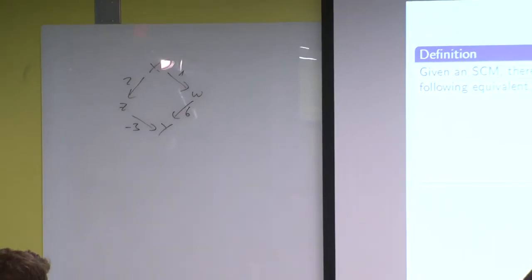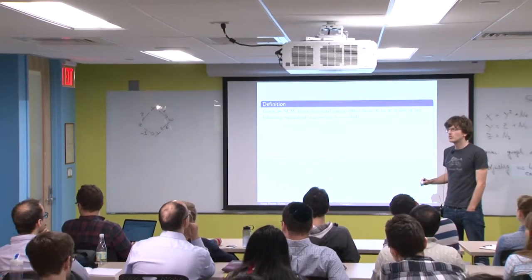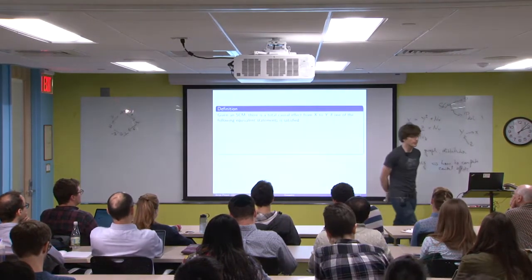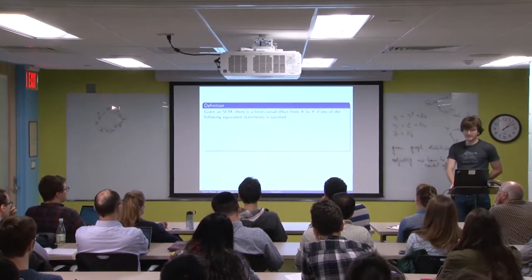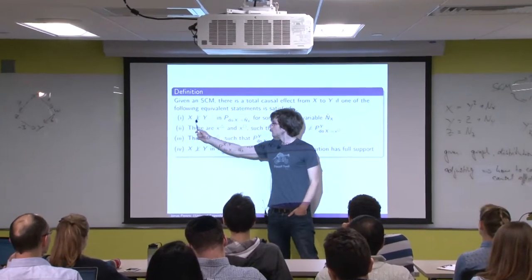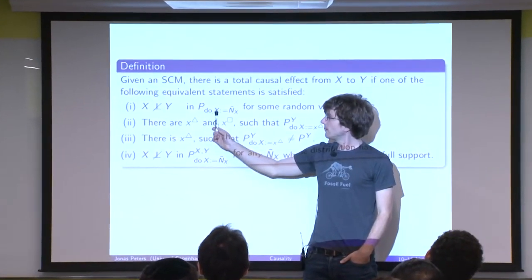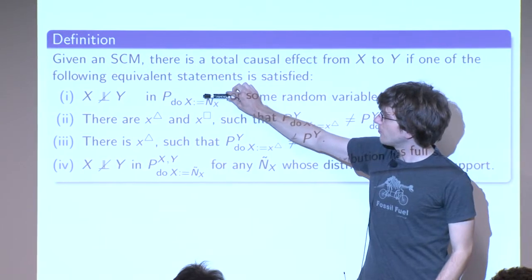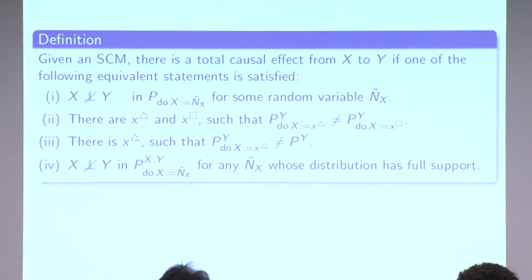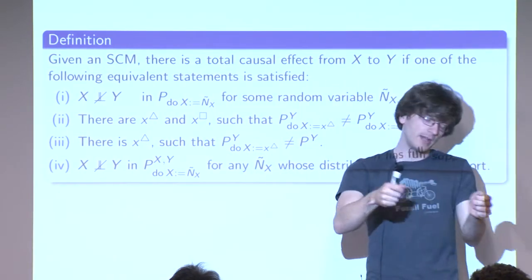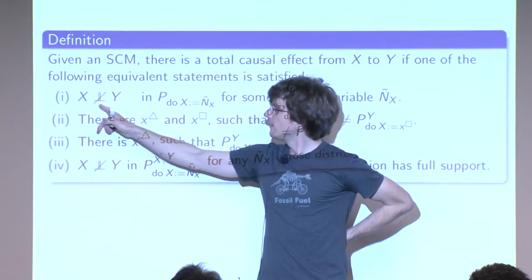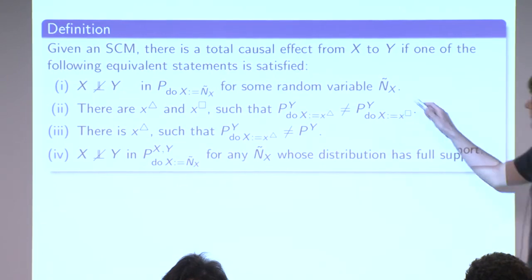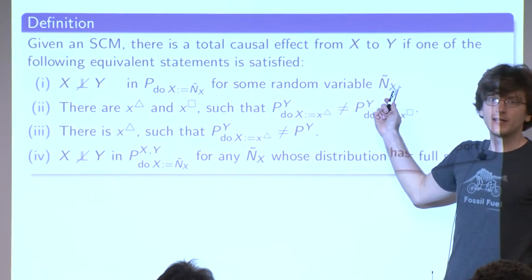Another suggestion: how much y changes when we change x. This goes in the direction of what we discussed before. Here we only want to define the existence of a total causal effect. One formal way: if you randomize x - set it to a noise distribution with full support - then x and y are found to be dependent. This is known from randomized studies, adopted in the medical sector: when you randomize the treatment and see the outcome depends on it, there must be a causal effect.